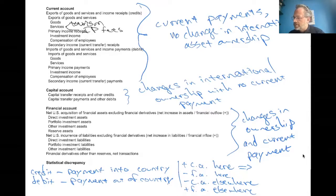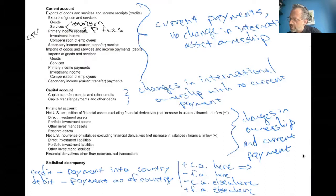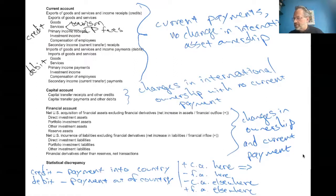Each of these items in the current account shows up twice — credit items such as US exports, US income receipts, and US transfer receipts, and then corresponding debit items for imports, income payments, and transfer payments. You add all those up and that gives your current account balance. Then we have the capital account — I won't say more about that — and then the financial account.